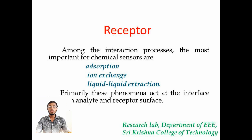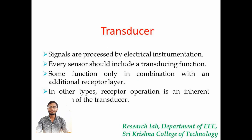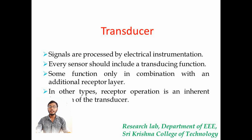The transducer is used to send the signals from the receptors and changes them into an electrical signal. The transducer amplifies the signal and sends it as an output. The output may be of voltage, etc.